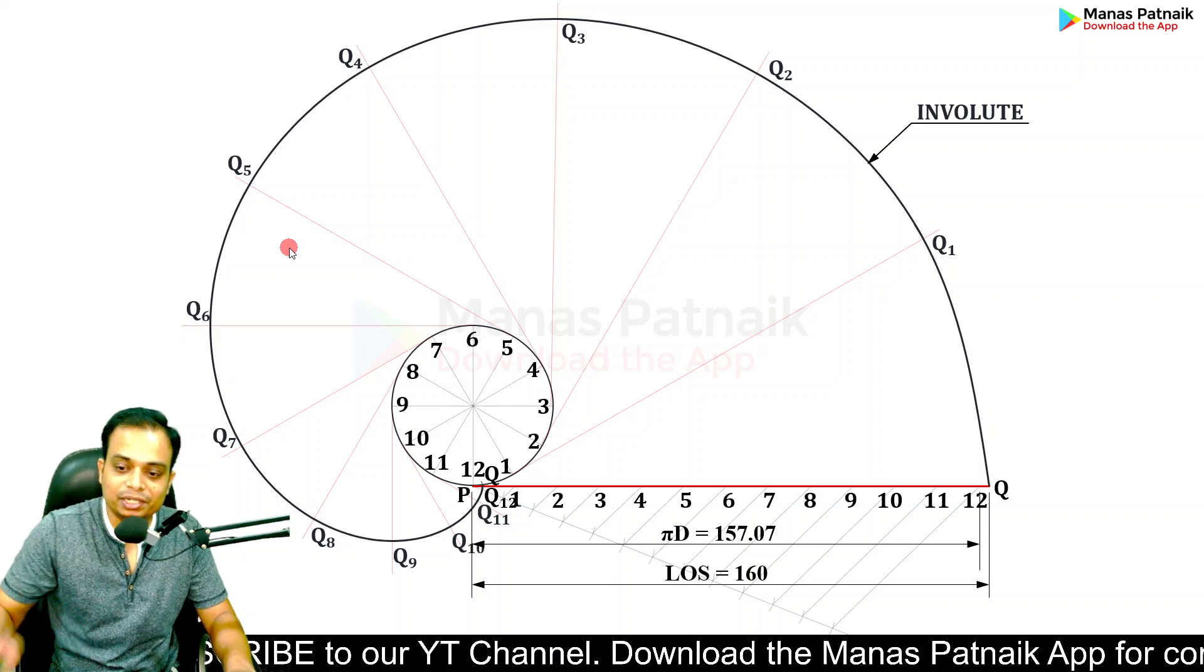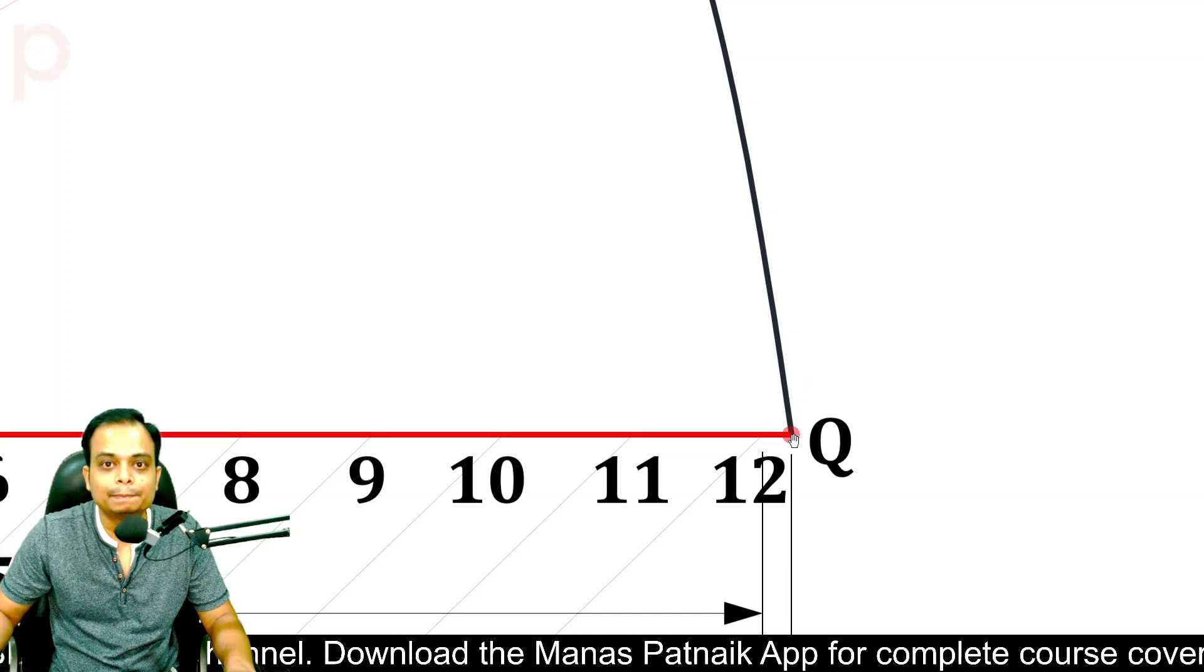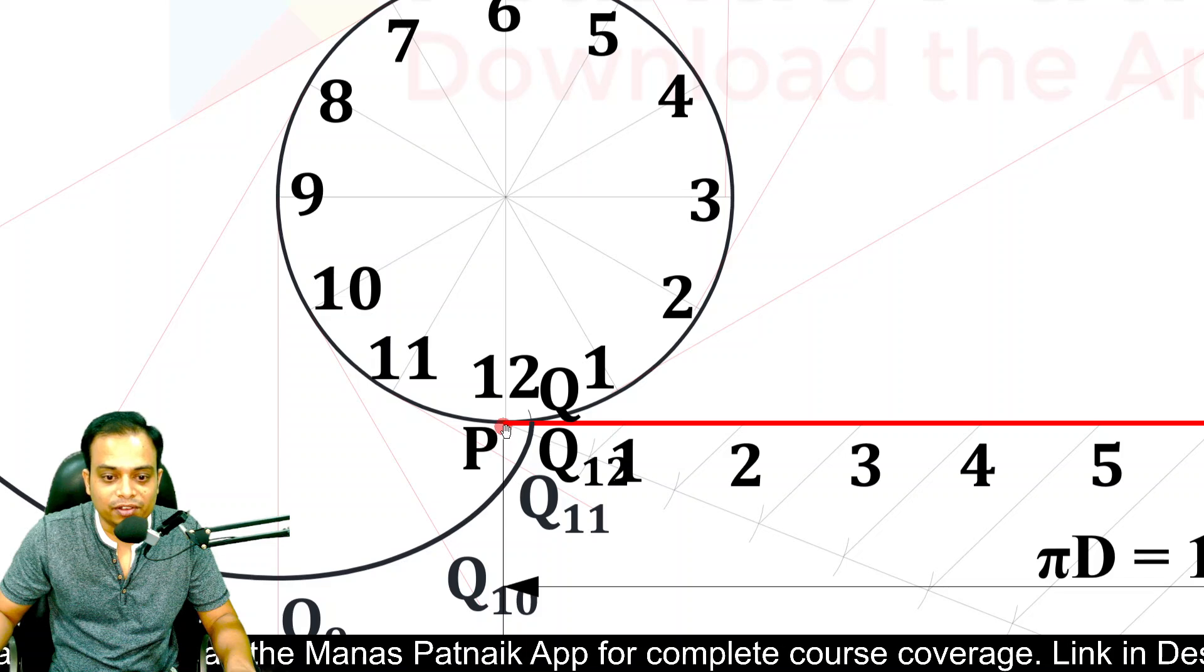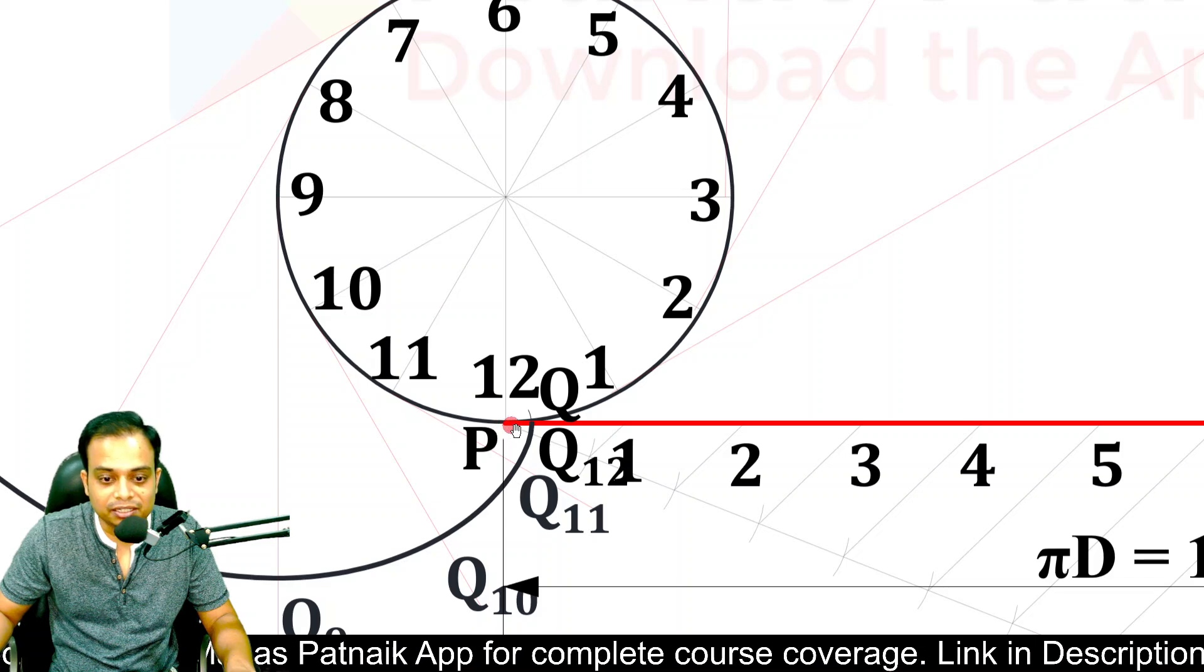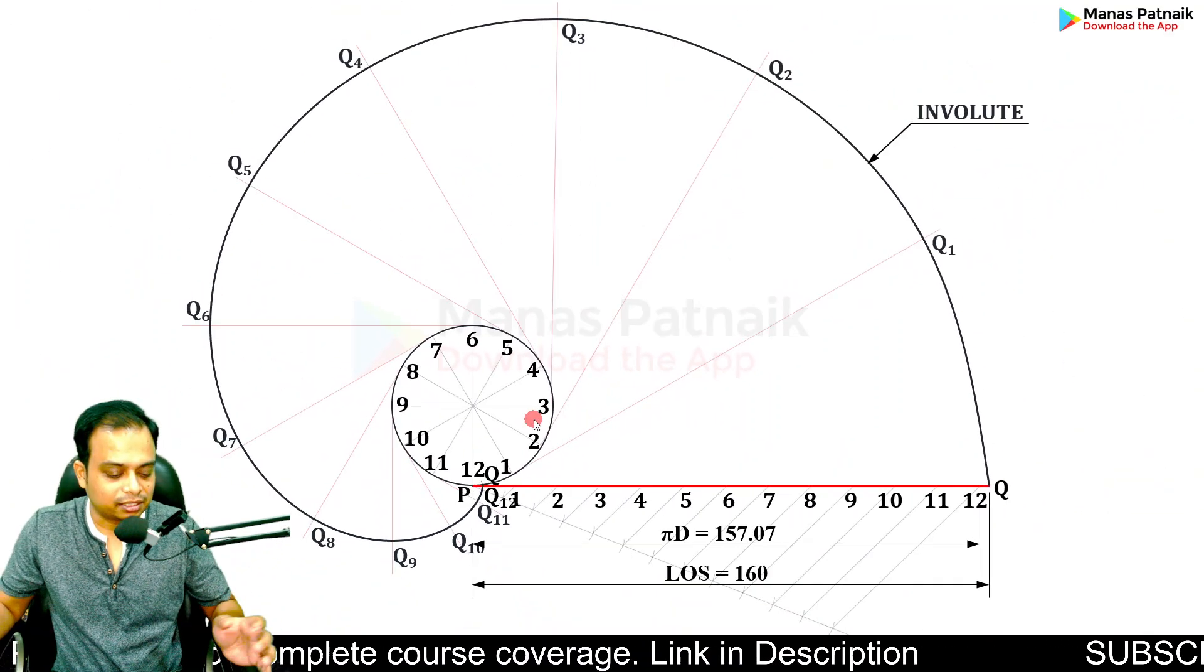The length of string was greater than the circle's circumference. How much greater? From 12 to Q—this much greater. That is why you saw the involute did not finish here; it rather finished somewhere here, slightly more than one complete revolution.